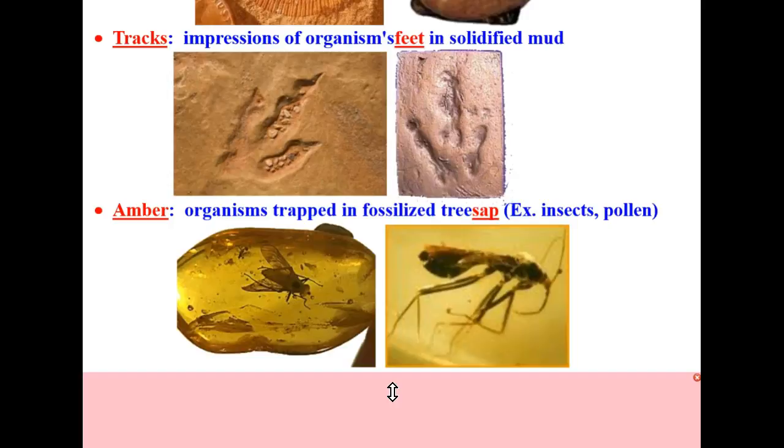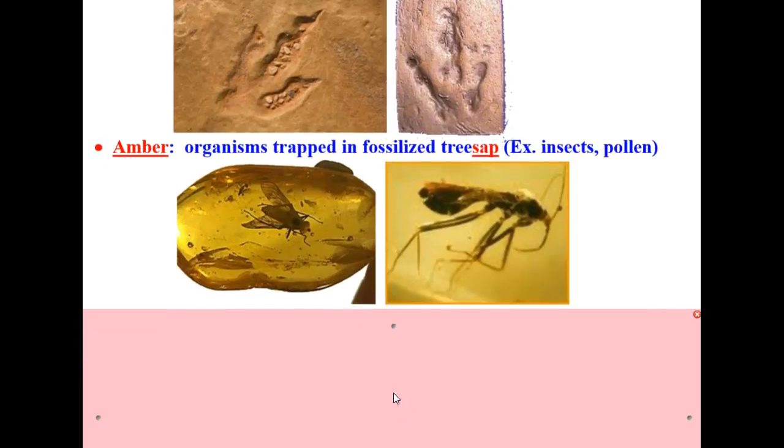You might recall this is what gave scientists in Jurassic Park the ability to extract DNA from insects that probably fed on dinosaurs and reproduce the dinosaurs for that amusement park.